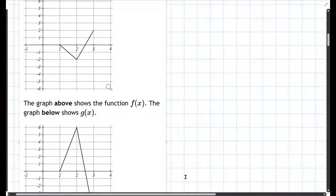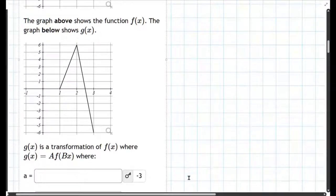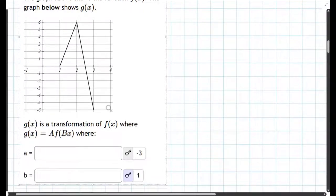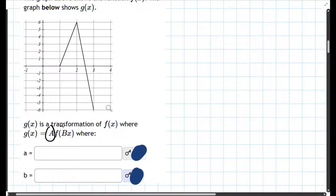In this question there's an original graph on the top, a transform graph on the bottom, and then we are supposed to pick out the values that are already on the screen. Let's pretend they're not. We're supposed to pick out the values a and b.